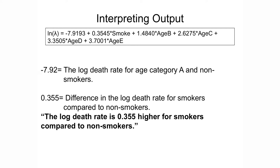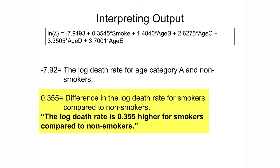Let's turn to an example where we're interested in the effect of smoking on death rate, adjusting for categorical age. Using smoke and age category as explanatory variables with the log death rate as the outcome, the intercept is negative 7.92. This tells us the log death rate for age category A and non-smokers — the reference groups. The coefficient for smoke is 0.355, which is the difference in the log death rate for smokers compared to non-smokers. The log death rate is 0.355 higher for smokers compared to non-smokers.